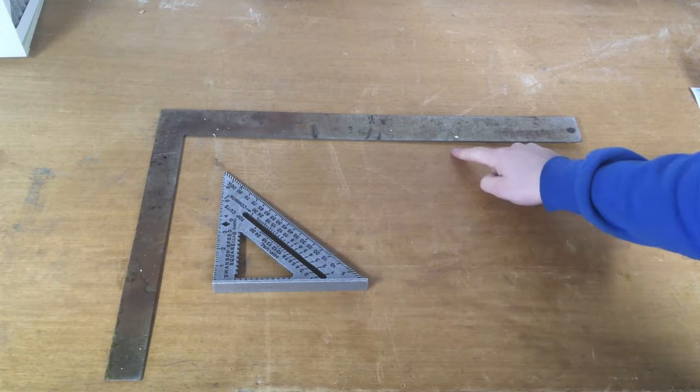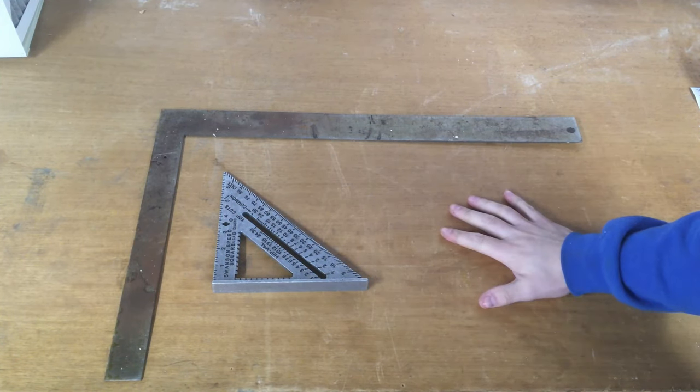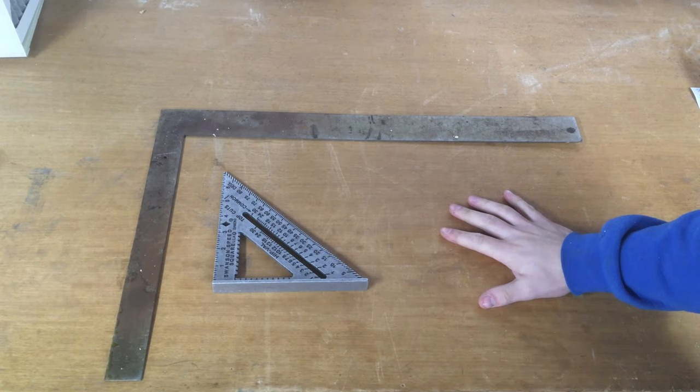I'll show you the speed square method, the rafter square method, or you could print a template from an online generator, and I'll link that below.